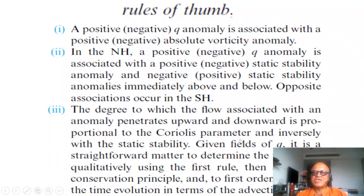The degree to which the flow associated with an anomaly penetrates upward or downward is proportional to the Coriolis parameter, the planetary vorticity, and inversely proportional to the static stability. You can think of it as stretching the air column. As you move the air column and stretch it, you're going to change the total vorticity by changing relative vorticity.